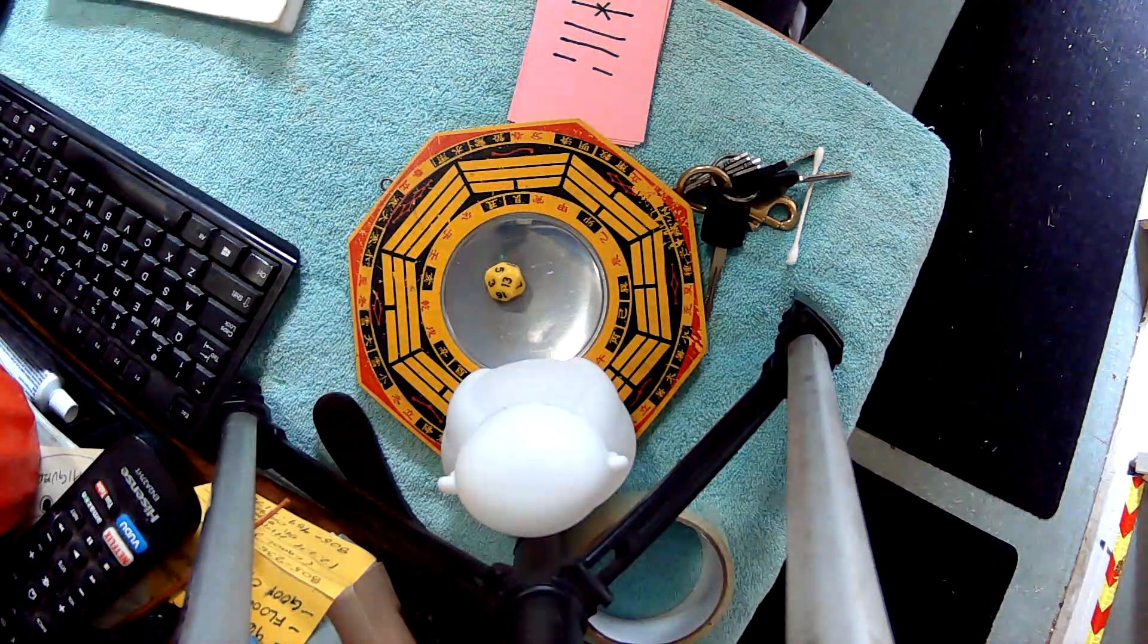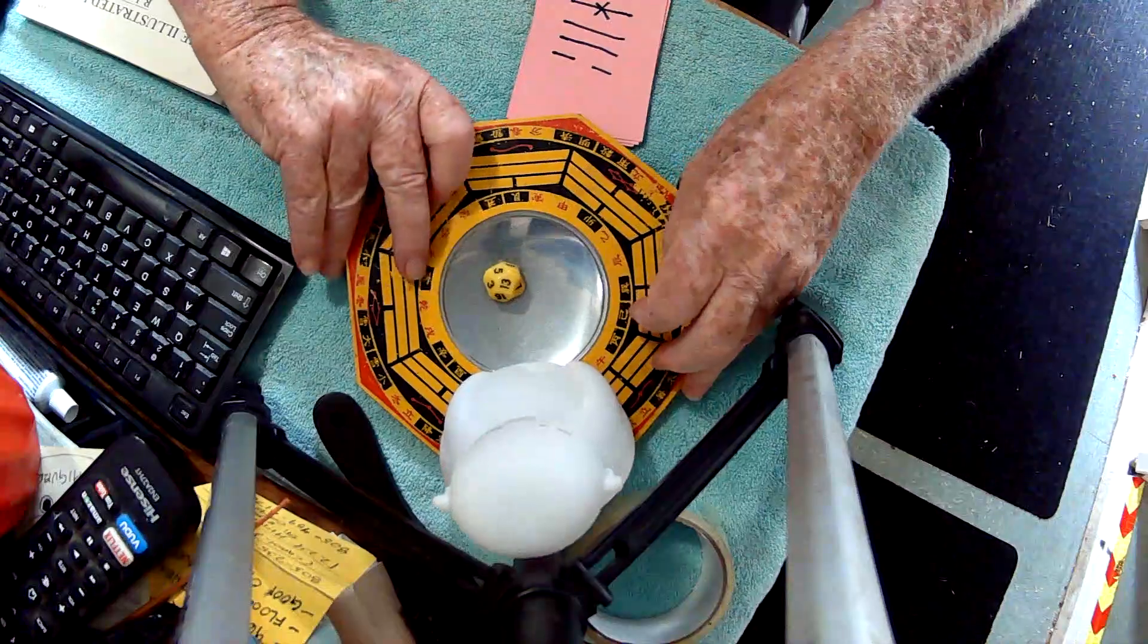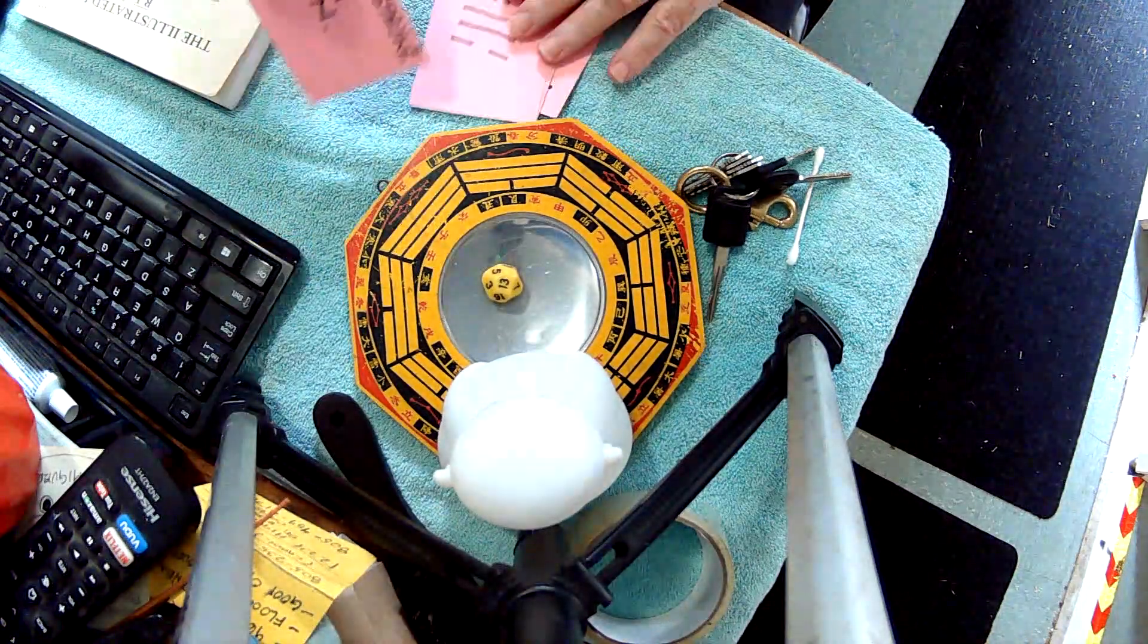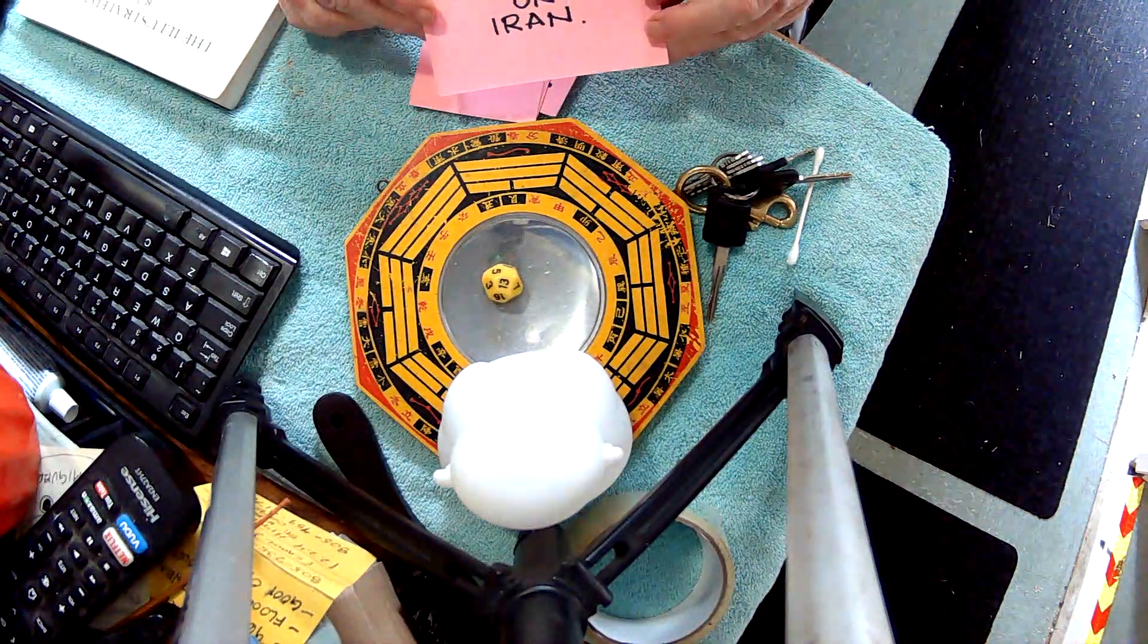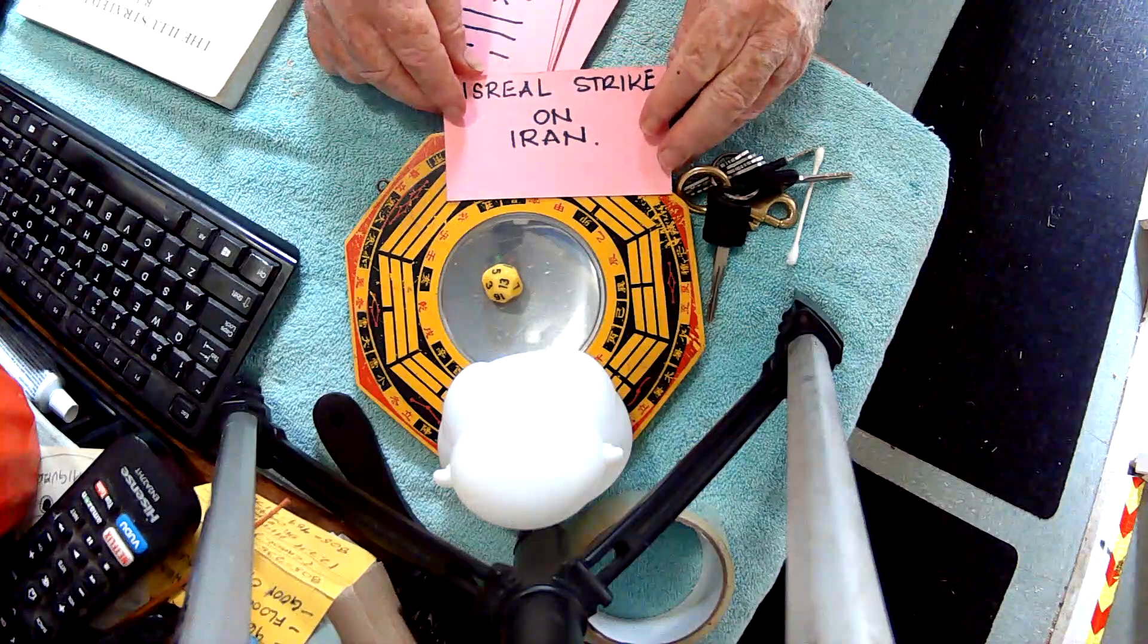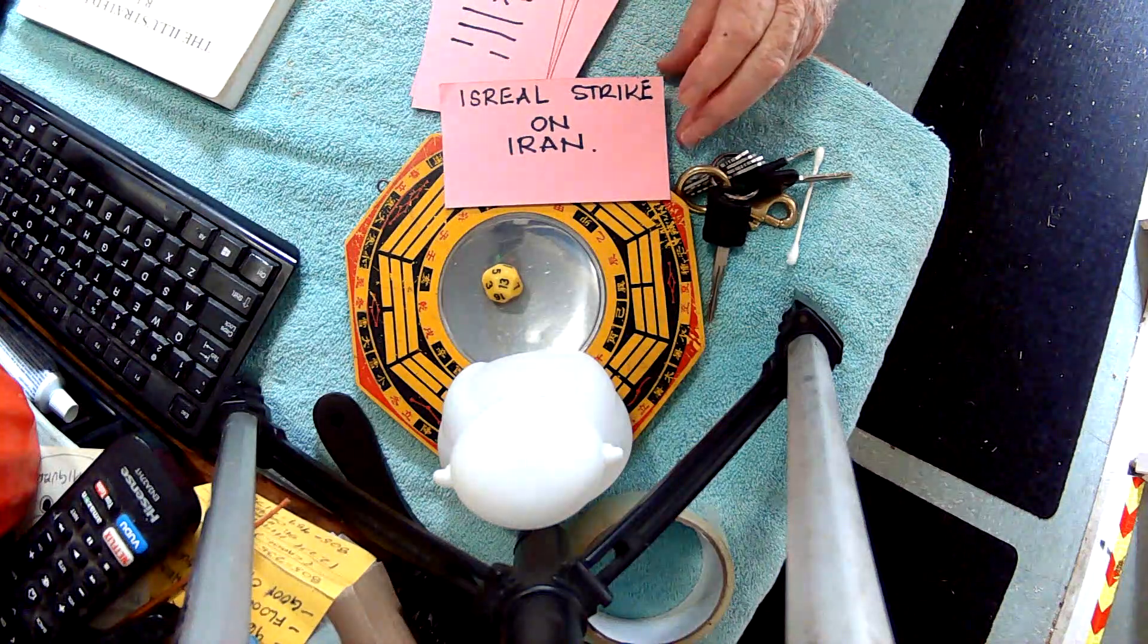And that is the I Ching today for Israel versus Iran. I misspelled Israel. That's okay, we were trying.